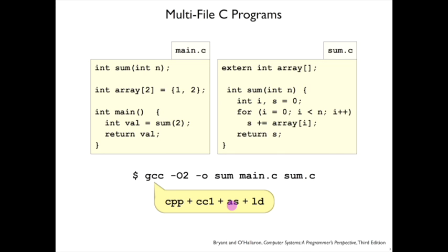Then there's an assembler step. And then finally, what we'll look at a lot today is the linking step at the end that links the machine code for main.c and sum.c together.